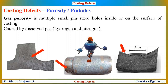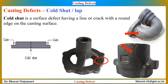Drying the moulds and cores before use and increasing the rate of solidification by reducing the metal temperature during casting can also reduce pin hole defects. Cold shut is a surface defect having a line or crack with a round edge on the casting surface. This defect is visible to the naked eye and often results in rejecting the casting as it creates a weak spot. When the molten metal enters the mould from two gates, the streams will meet at a junction. Low temperatures can prevent fusion at this junction, causing the streams to solidify before fusion, creating a cold shut. Cold shut is usually a result of lack of fluidity of the molten metal or a poor design of the gating system.